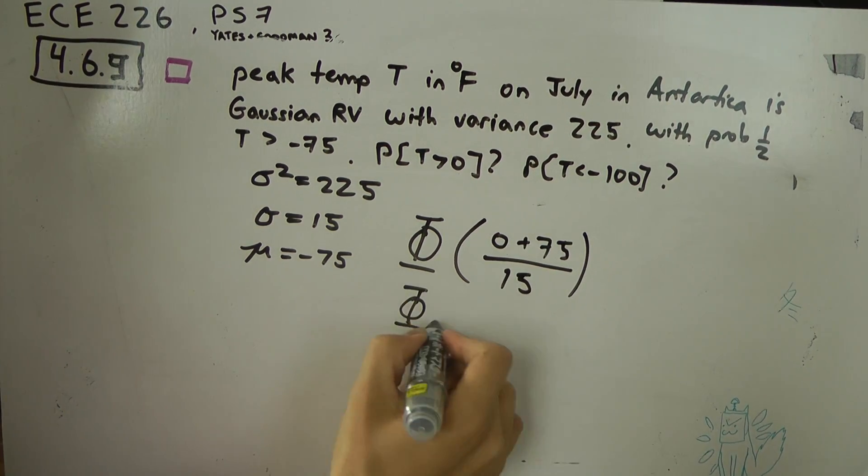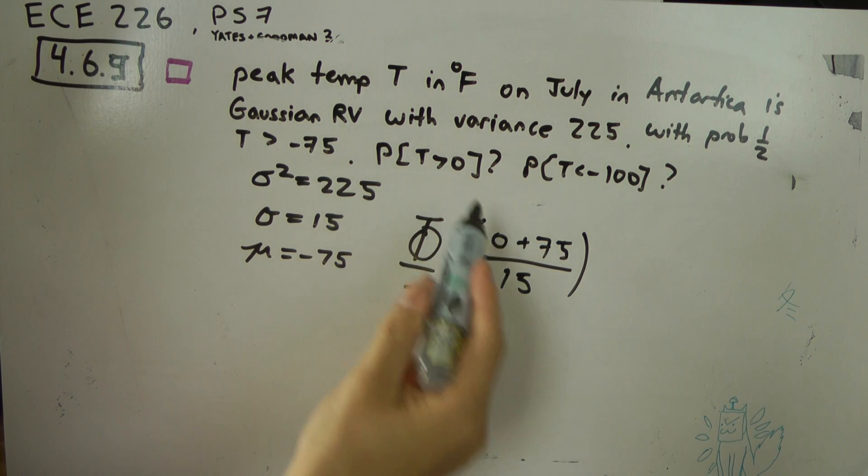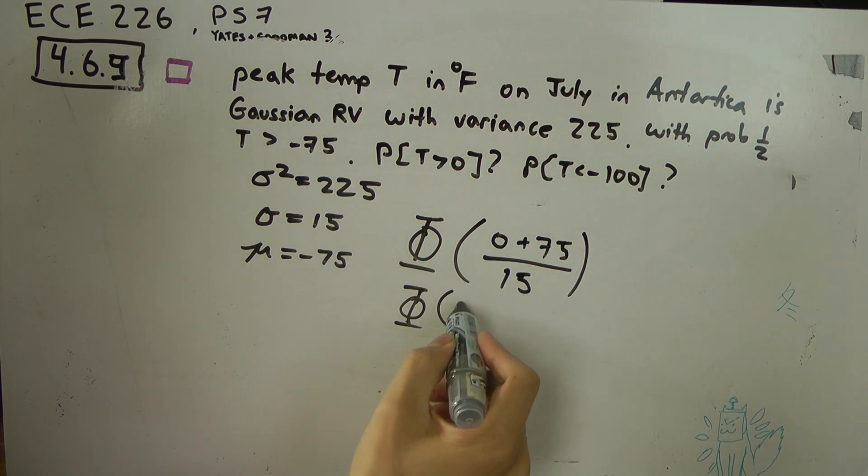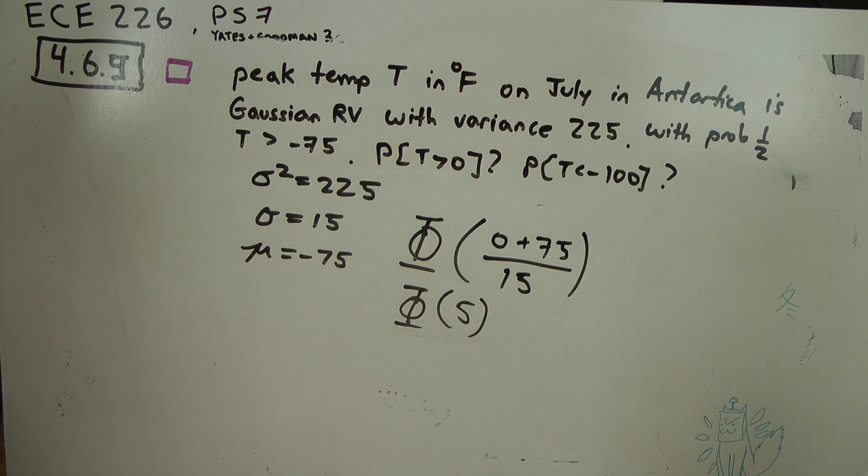So the answer to the first part, probability that temperature is greater than zero, is just phi of five, which is very, very small.